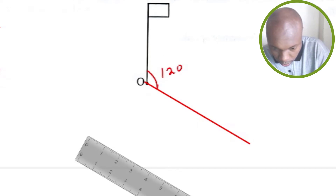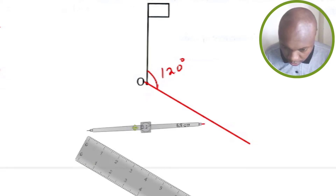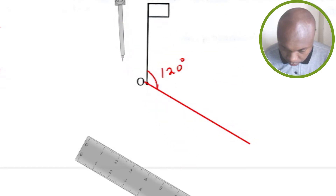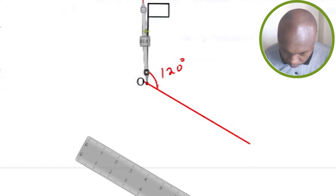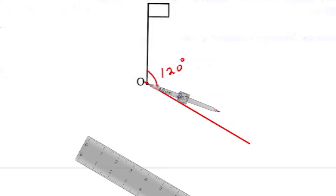This angle is 120 degrees. From there we need to take another measurement — this arm of this figure. I want to take this length, the length of that arm, and that one should also be the same, so I take that measurement and transfer it on the other side.